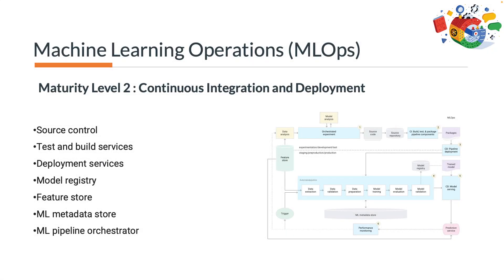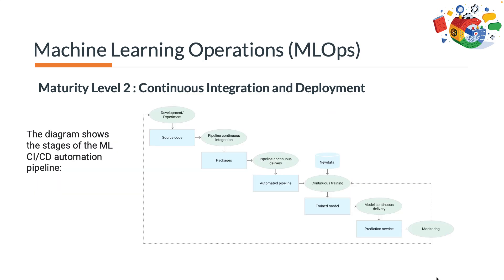Maturity level 2: continuous integration and deployment. For a rapid and reliable update of the pipeline in production, you need a robust automated CI/CD system. This automated continuous integration and delivery system lets your data scientists rapidly explore new ideas around feature engineering, model architecture, and hyperparameters. The components involved include source control, test and build services, deployment services, model registry, feature store, machine learning metadata store, and machine learning pipeline orchestrator.